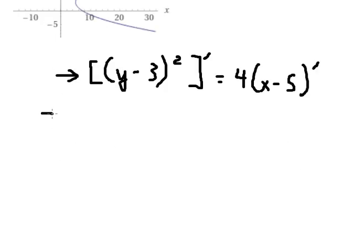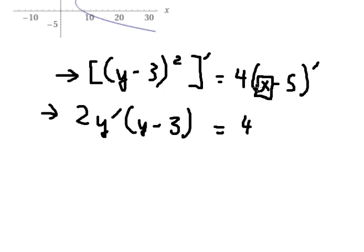We have 2 times the differential of y times (y - 3). For the differential of x we have 1, and for the constant we get 0.